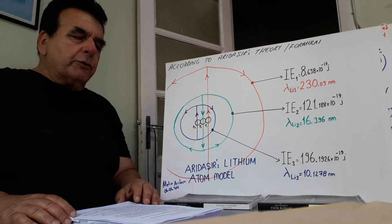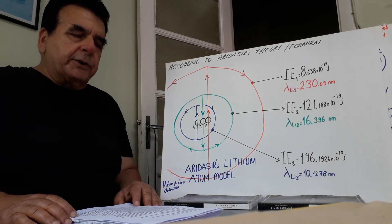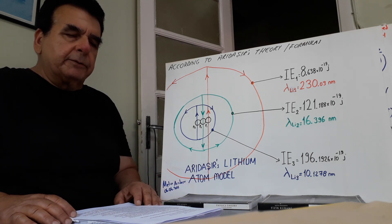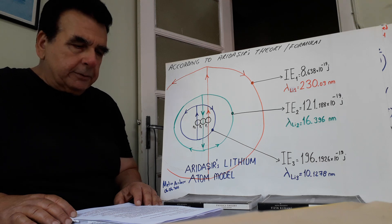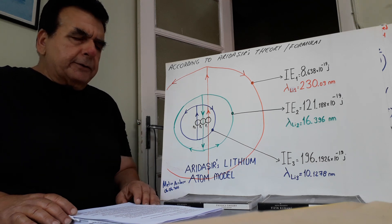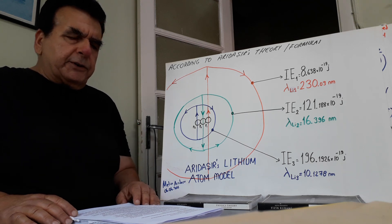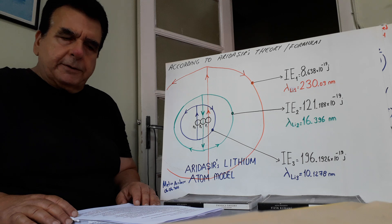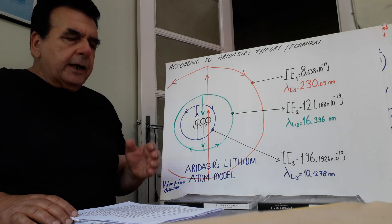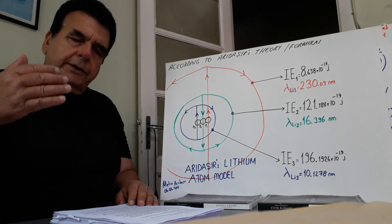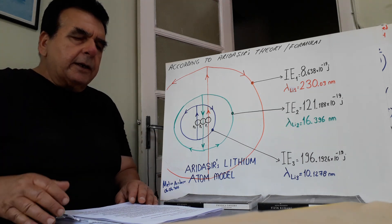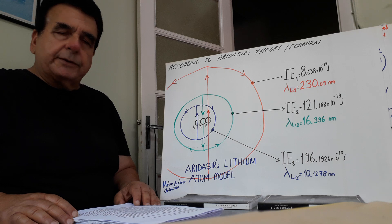C: Electrons are moving particles located probabilistically around the atomic nucleus. D: Electrons are objects with a constant rest mass. As the distance from the nucleus increases, electrons' energy levels increase.